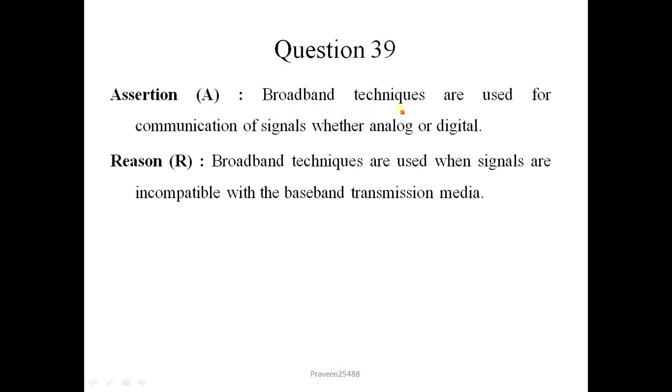Next question is. Broadband techniques are used for communication of signals whether analog or digital. Basically broadband techniques, for example TV cable which is used for analog transmission, and on the other hand optical fiber cables which is used for text or videos, so it also provides digital transmission. This statement is correct. Second is broadband techniques are used when signals are incompatible with the baseband transmission media. The baseband means the point to point transmission just like Ethernet. And on the other hand broadband is point to multipoint which allows the transmission in a single medium with shared bandwidth. So this statement is also correct. It is not the correct explanation of this statement. So correct option is 1.